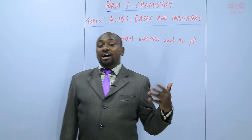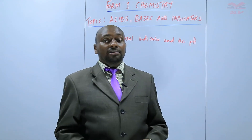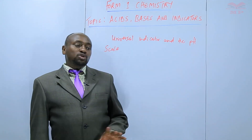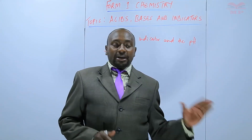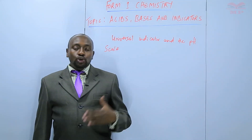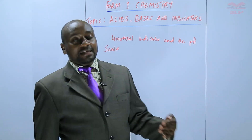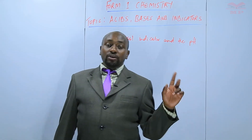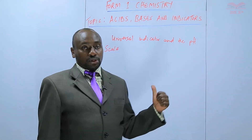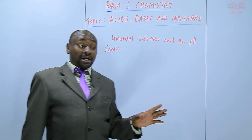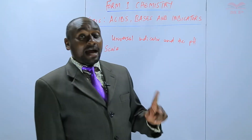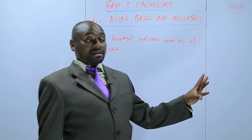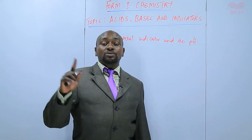All the other indicators that we have learned before were showing whether a solution is acidic, but they were not going ahead to inform us whether that acid is strong or weak. But for the universal indicator, this one answers that question. So it gives different colors with strong acids and different colors with weak acids, and different colors with strong bases and different colors with weak bases.